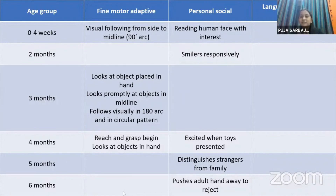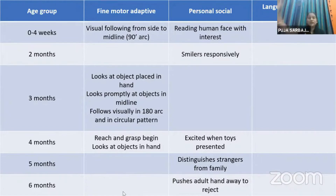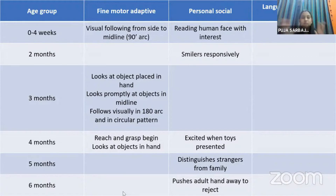At two months, the child gives similar facial responses. At three months, tracking expands from 90 degrees to a full 180 degrees. At four months, the child starts reaching and grasping objects and gets excited by new toys. At five months, they distinguish familiar people, and at six months they begin rejecting unfamiliar hands.